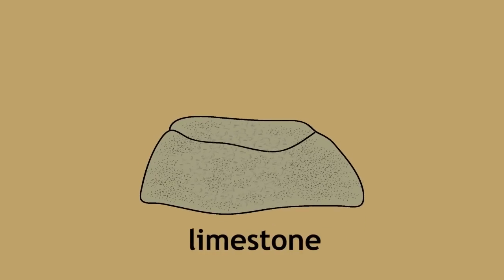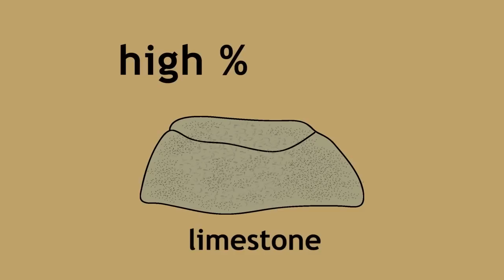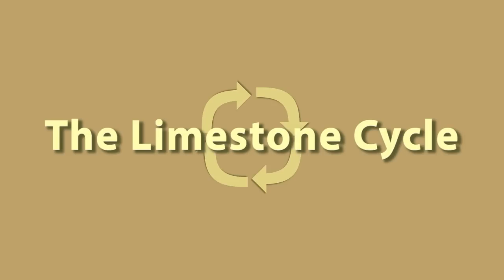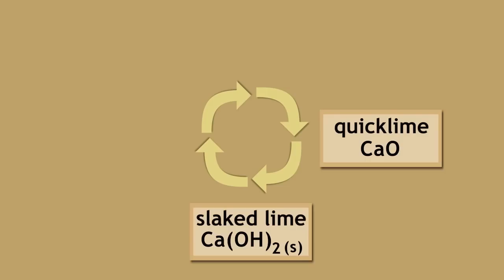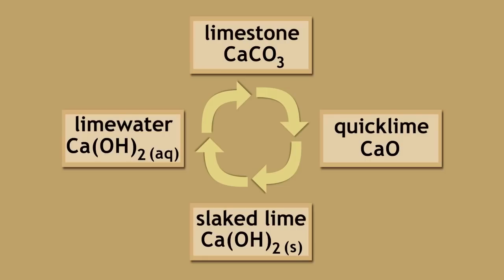In summary, limestone is a sedimentary rock with a high percentage of calcium carbonate formed from the compression of deposited dead marine organisms. The limestone cycle involves the formation of quicklime, slaked lime, and lime water and limestone once again.